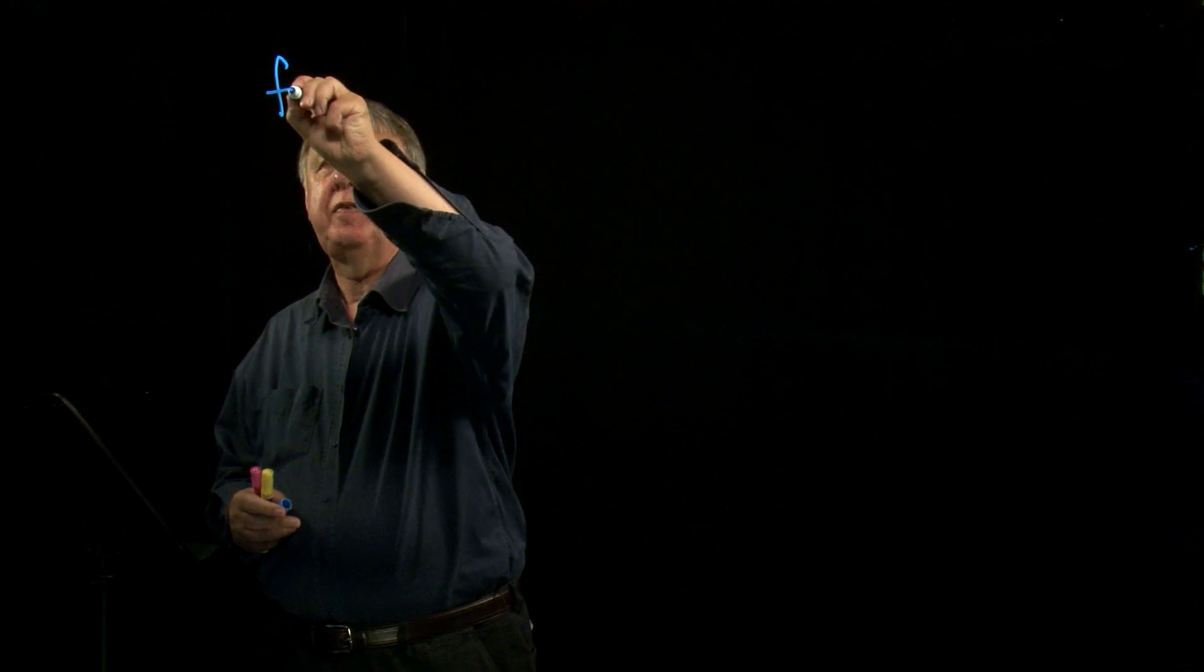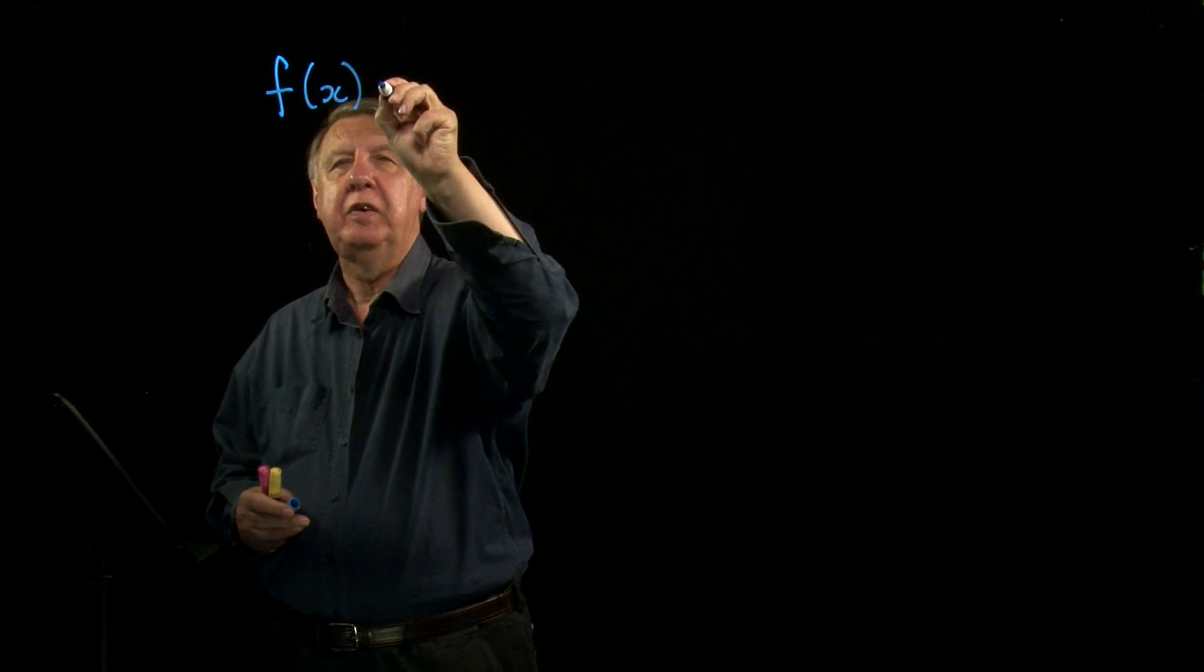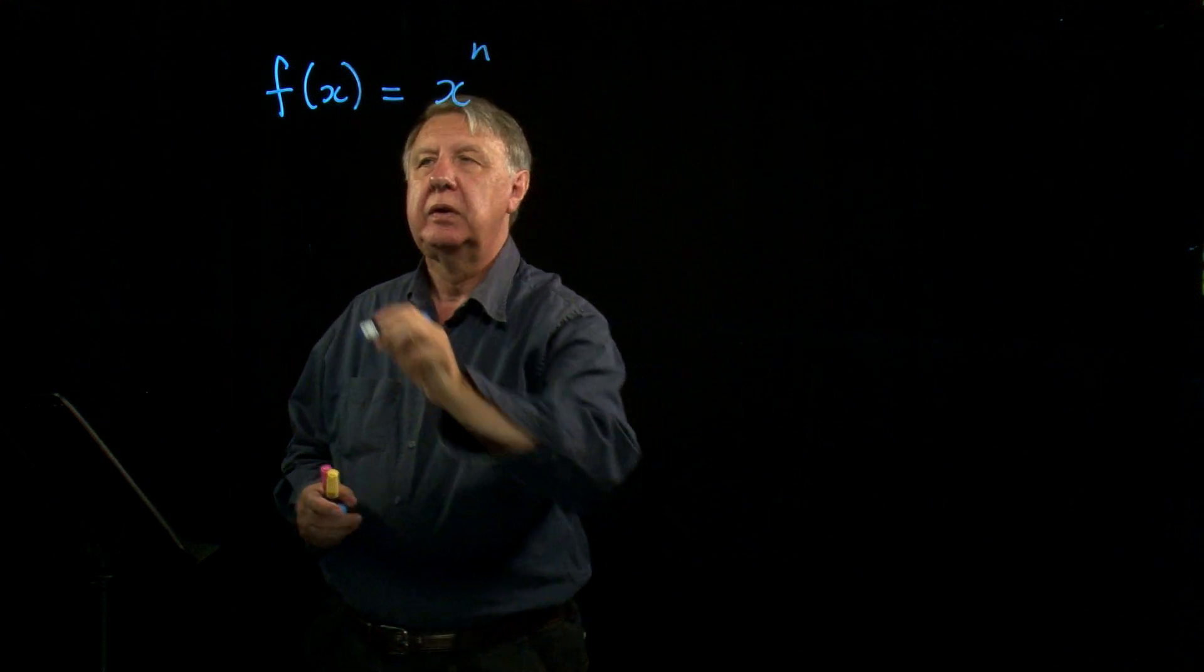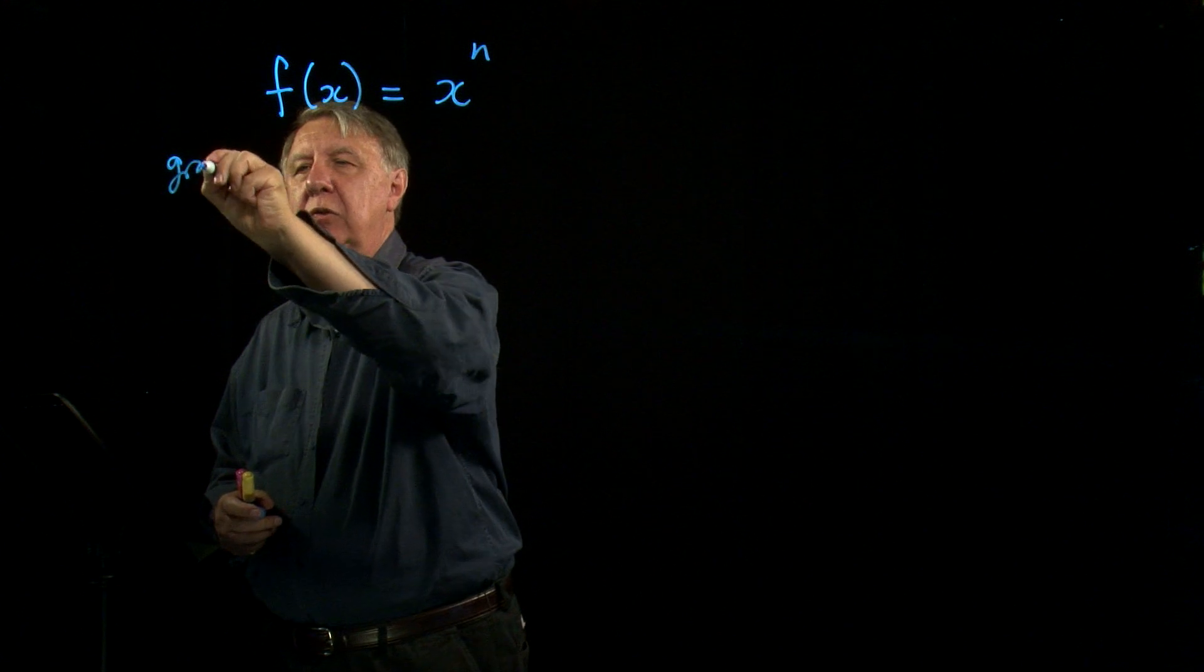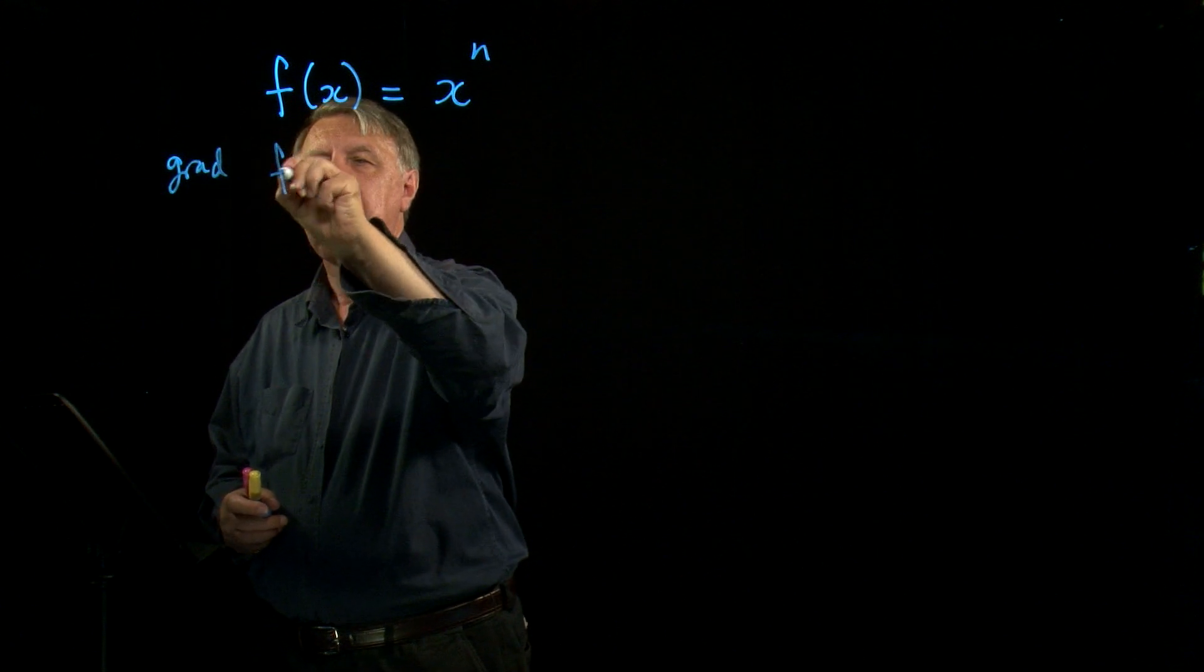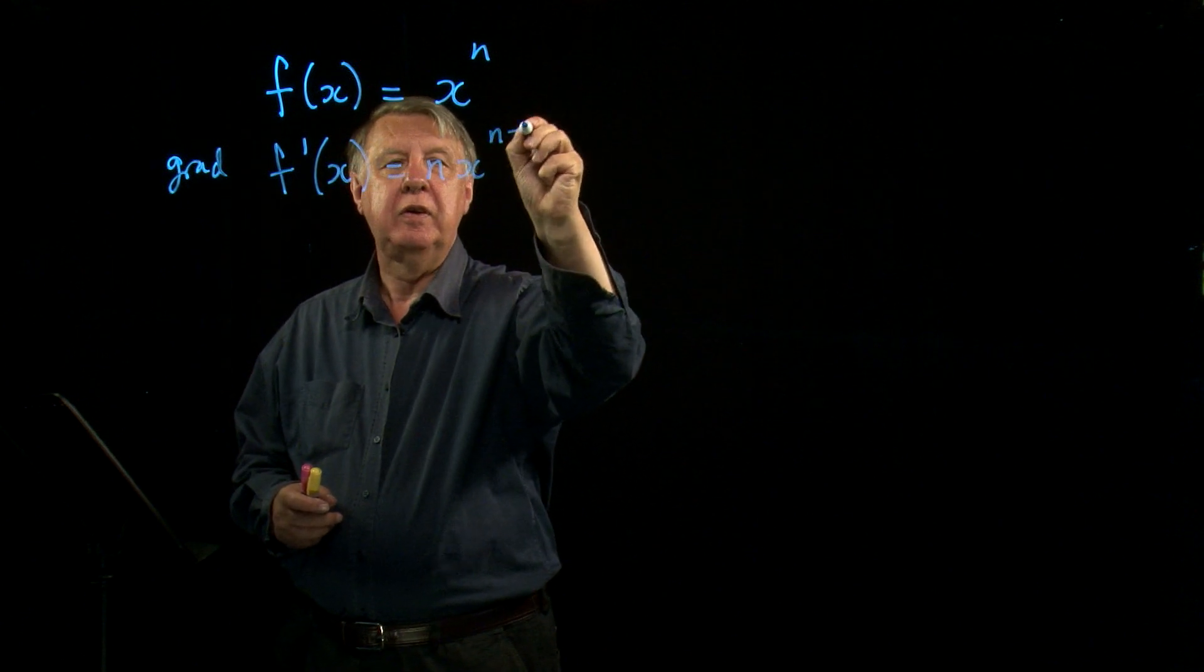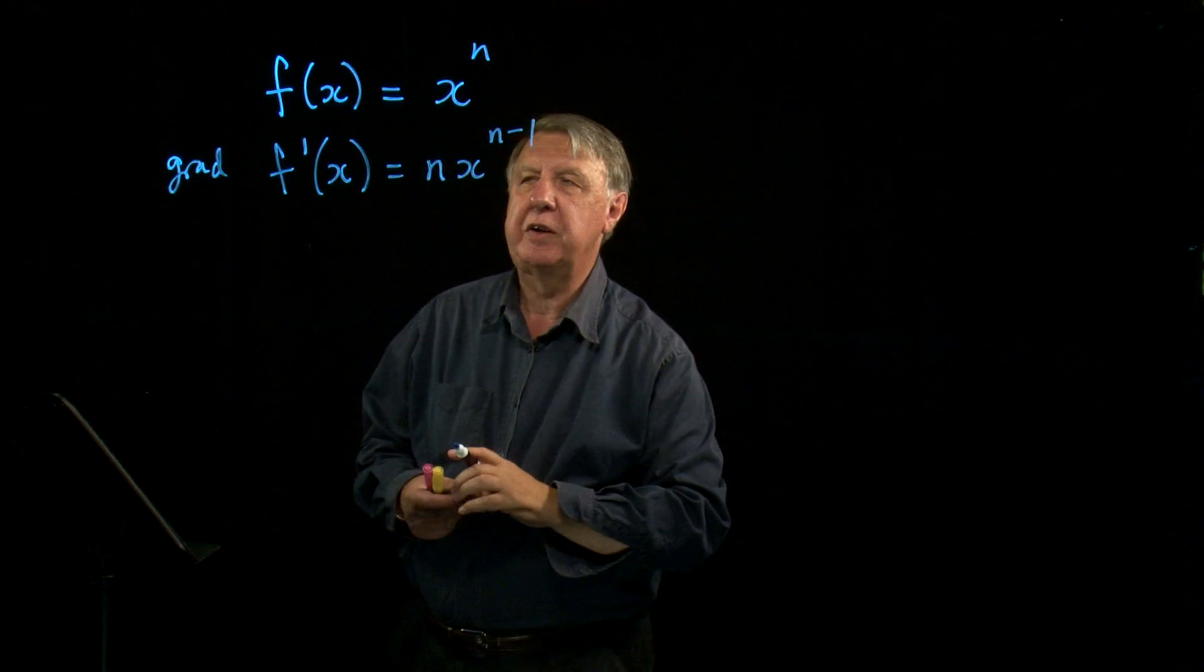Previous lesson we talked about the process of differentiation using function notation. We said that if f(x) was x to the power n, then the gradient function, which we use the dash notation f'(x), is nx to the n minus 1.